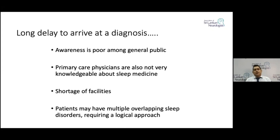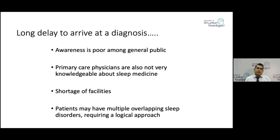The country has only a few such labs. Another issue is that patients may have multiple sleep problems overlapping with each other, which requires a logical approach. A good example is that people with narcolepsy can be a little obese and may have an element of obstructive sleep apnea — their OSA gets the diagnosis and they are managed as an OSA patient, so the diagnosis of narcolepsy could be delayed.